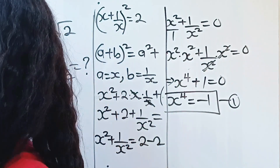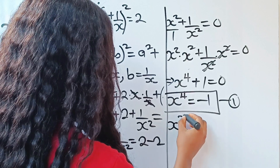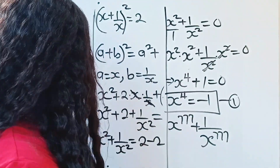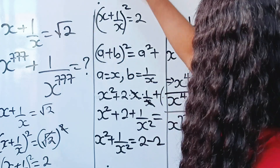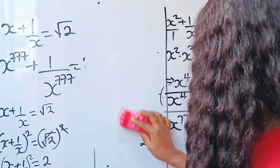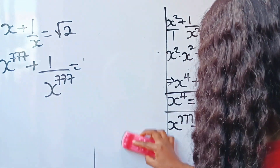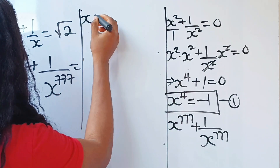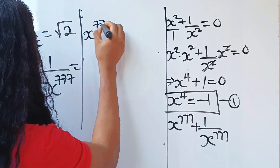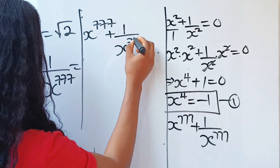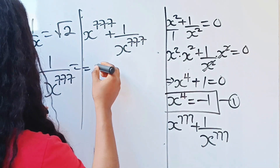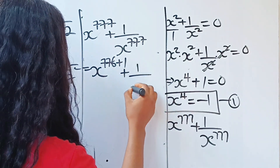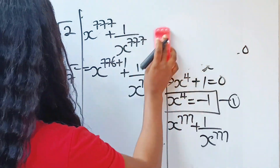Let's go back to our question. We need to evaluate x to the power of 777 plus 1 over x to the power of 777. We can rewrite the exponent 777 as 776 plus 1, so this becomes x to the power of 776 plus 1, plus 1 over x to the power of 776 plus 1.